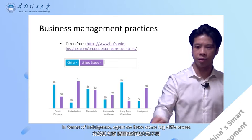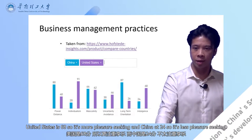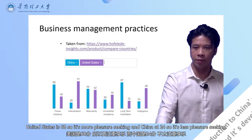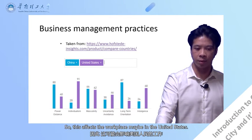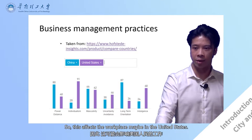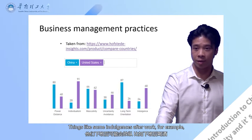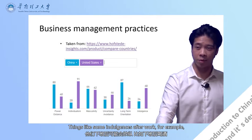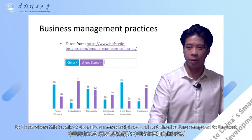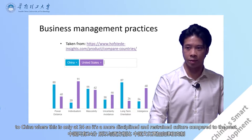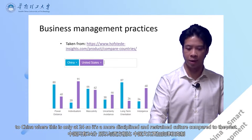In terms of indulgence, again, we have big differences. The United States is at 68, so it's more pleasure-seeking. China is at 24, so it's less pleasure-seeking. This affects the workplace — maybe in the United States, things like after-work drinks are a lot more common compared to China, where this is only at 24. So it's more of a disciplined and restrained culture compared to the West.